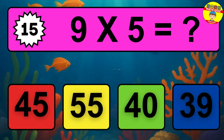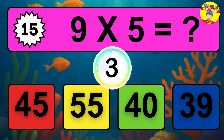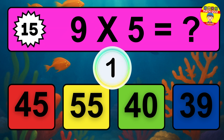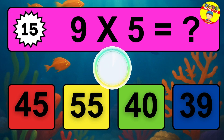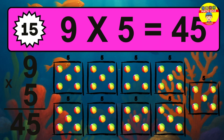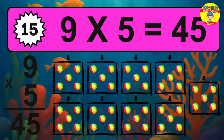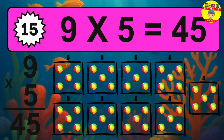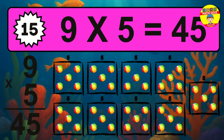Question 15. 9 times 5 equals what? The answer is 9 times 5 is 45. To calculate, we have 9 groups with 5 balls each one. So, how many balls do we have? 45 balls.